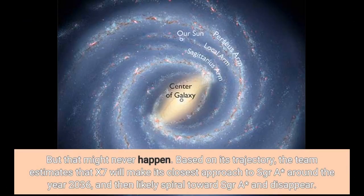But that might never happen. Based on its trajectory, the team estimates that X-7 will make its closest approach to SGR A asterisk around the year 2036, and then likely spiral toward SGR A asterisk and disappear.